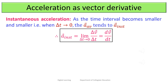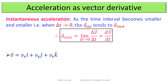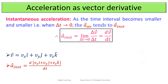Expressing velocity in terms of its components as v⃗ = vₓ î + v_y ĵ + v_z k̂, the instantaneous acceleration becomes a⃗ = d/dt(vₓ î + v_y ĵ + v_z k̂) = aₓ î + a_y ĵ + a_z k̂, where aₓ = dvₓ/dt, a_y = dv_y/dt, and a_z = dv_z/dt.